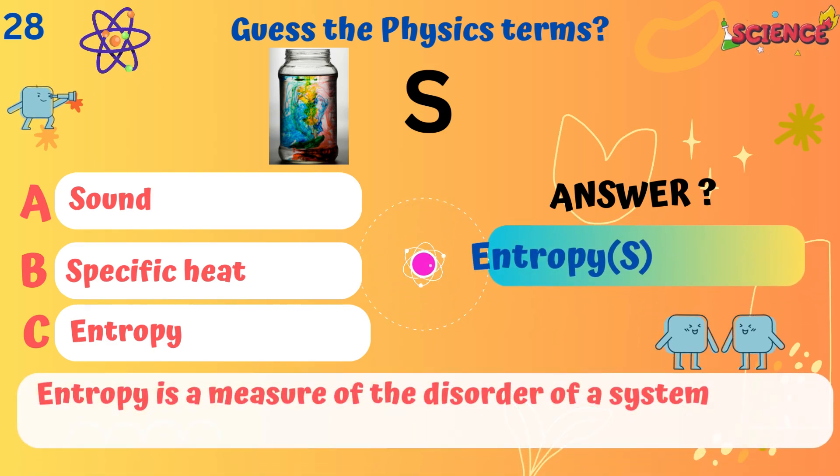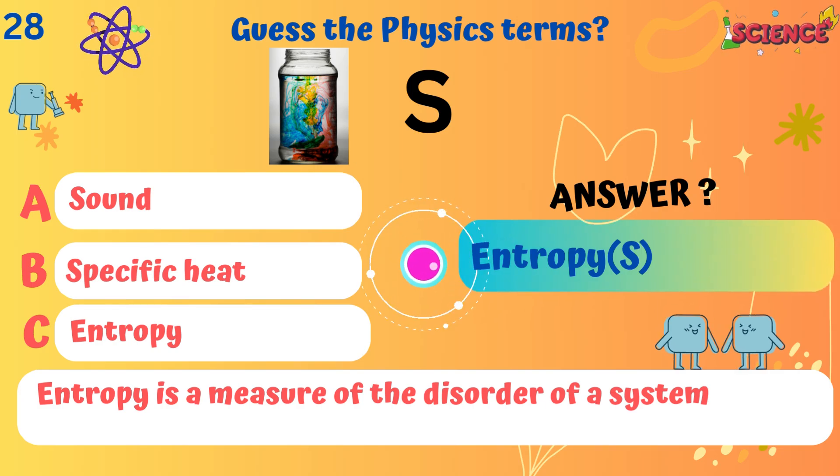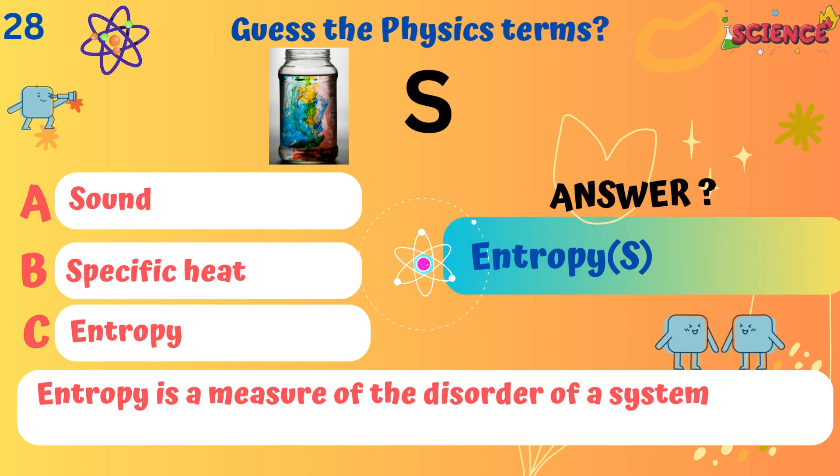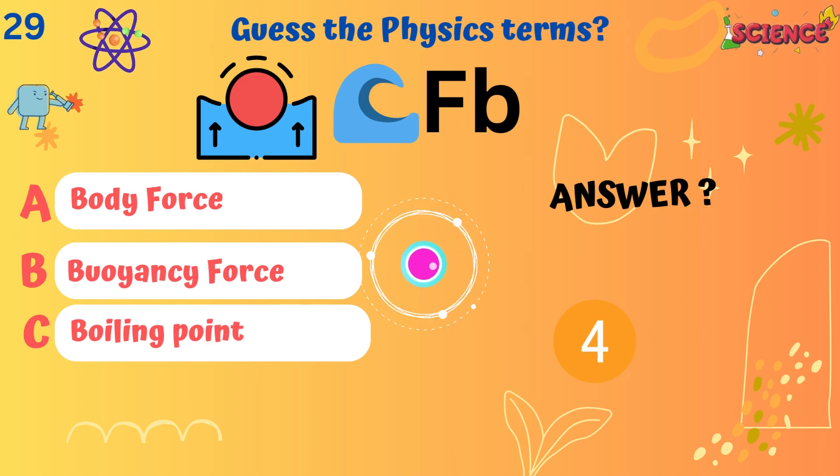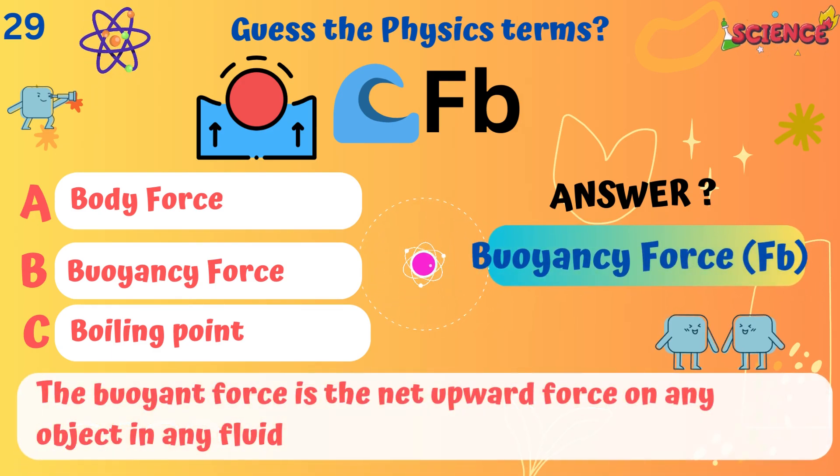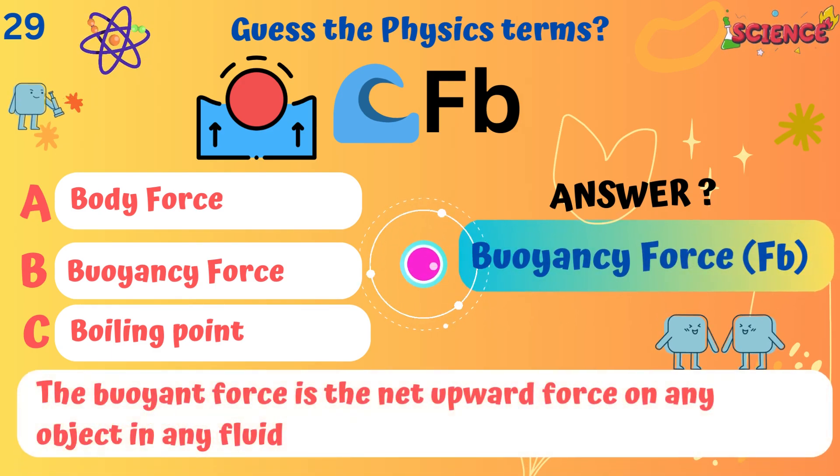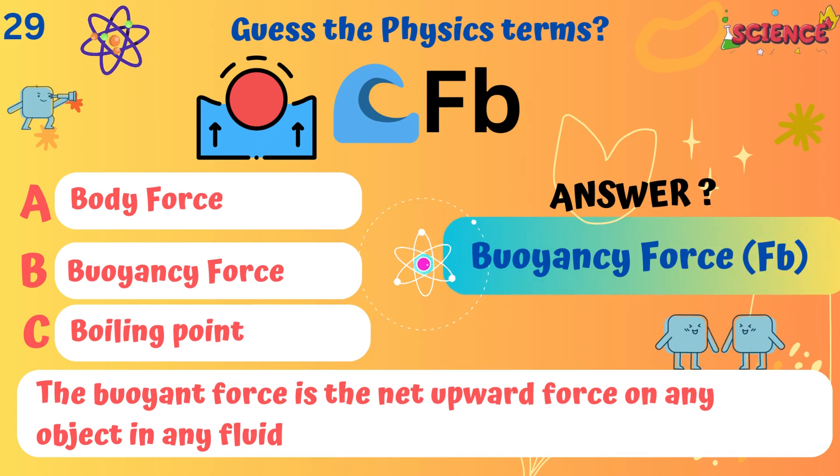Entropy. Entropy is a measure of the disorder of a system. Buoyancy Force. The buoyant force is the net upward force on any object in any fluid.